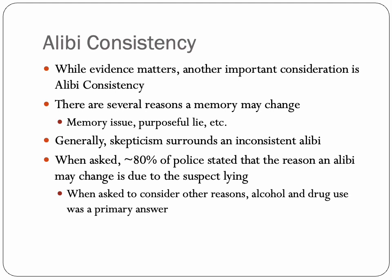Alibi consistency also matters. While evidence matters, an important consideration is consistency, and there are several reasons a memory might change: it could be a memory issue — you've just forgotten where you were — or it could be a purposeful lie. However, there's always skepticism surrounding inconsistent alibis. When asked, 80% of police stated that the reason an alibi may change is due to the suspect lying. The number one thought from law enforcement is that the suspect is not being honest, and that's why they changed the alibi.